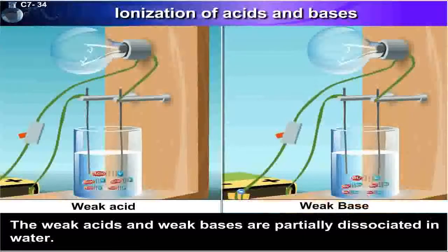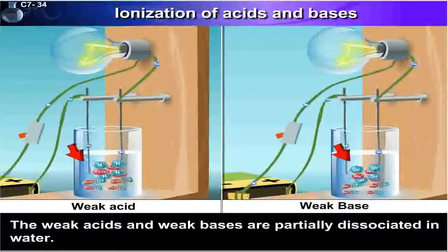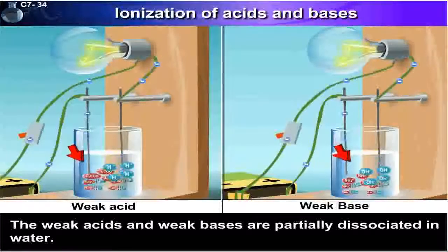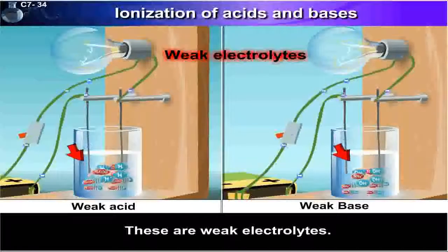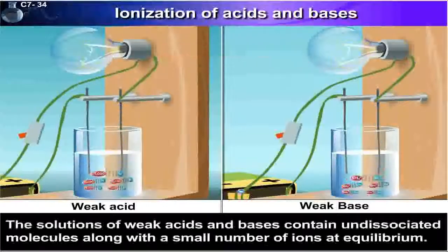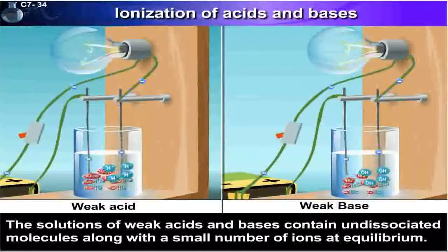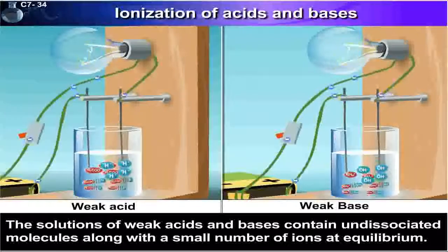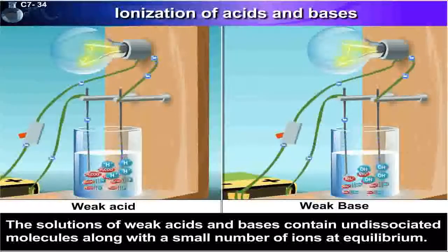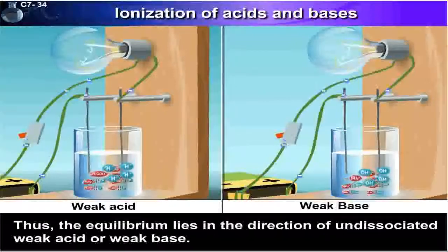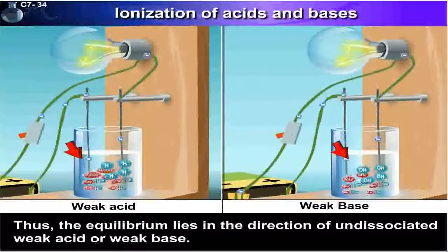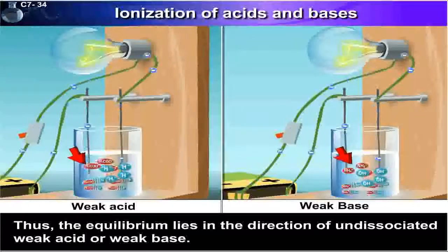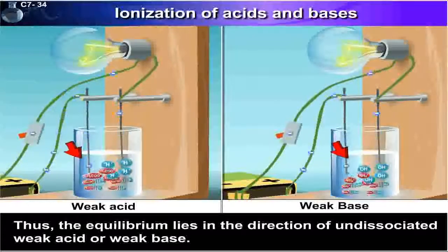The weak acids and weak bases are partially dissociated in water. These are weak electrolytes. The solutions of weak acids and bases contain undissociated molecules along with a small number of ions at equilibrium. Thus, the equilibrium lies in the direction of the undissociated weak acid or weak base.